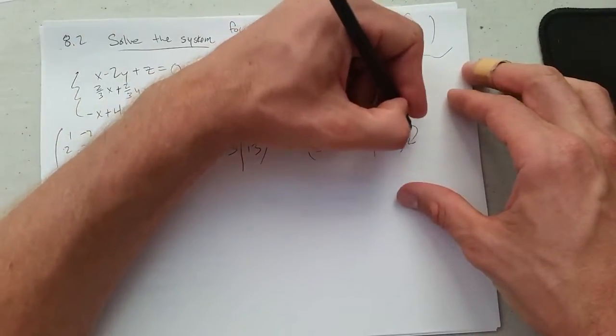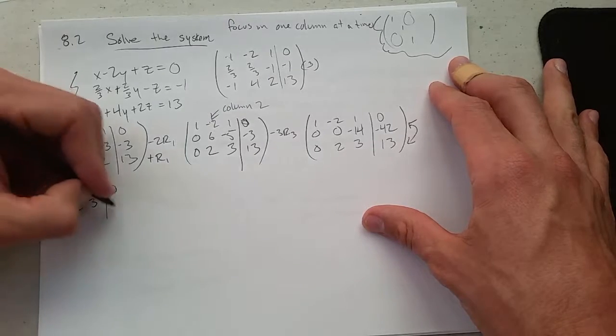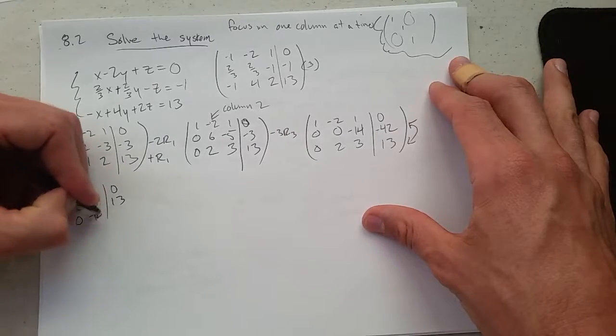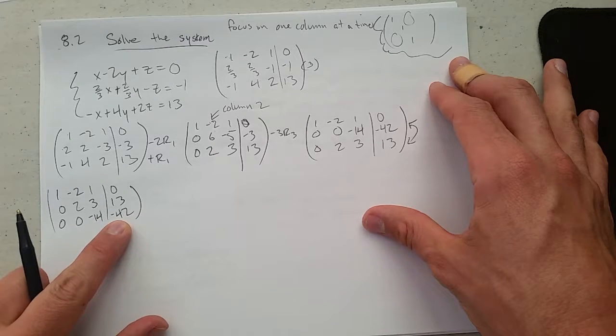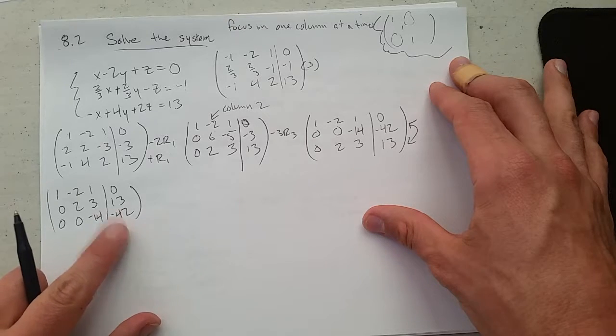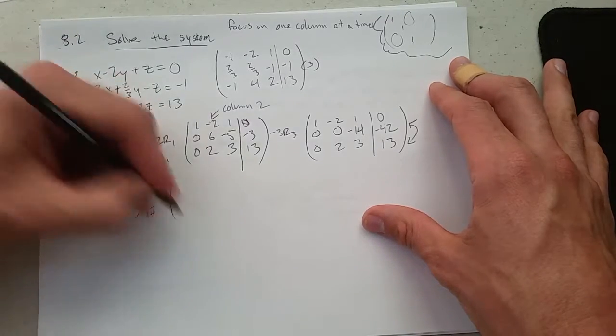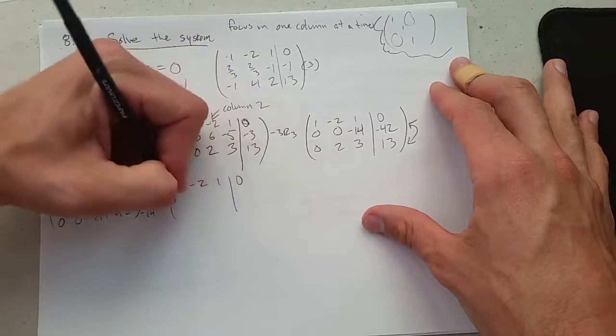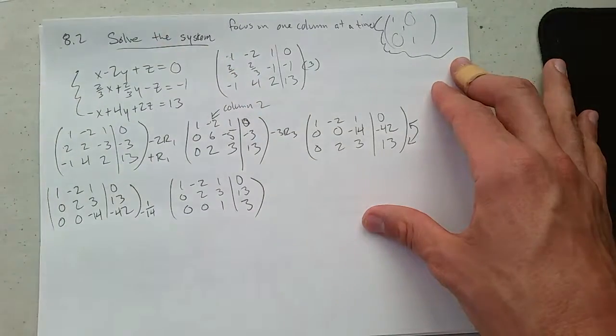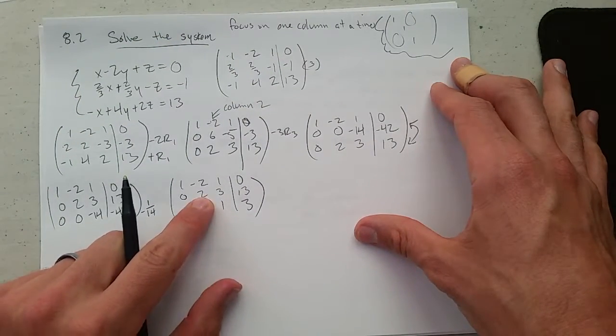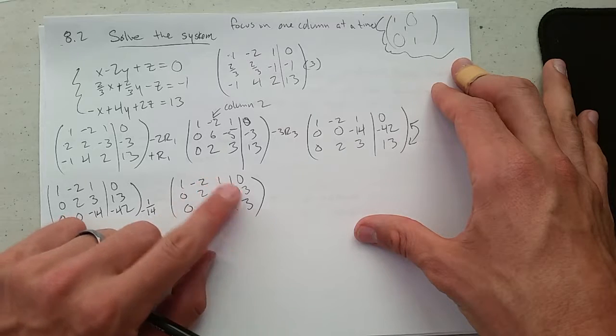So we can swap these rows here. So 14 times 3 is 42. So if I divide by, or multiply by negative 1 14th, it will look a lot nicer. And now, I could use this 2 to knock out the negative 2 very easily. But if I do that, I'll have to worry about that'll change that number, this number will change that one as well.